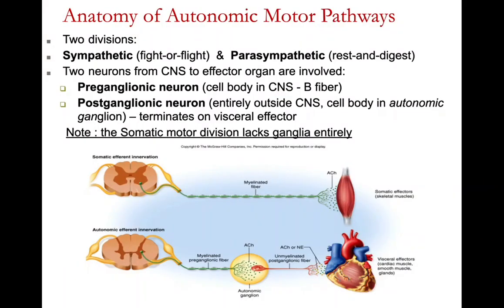There are two divisions: the sympathetic — fight or flight — and the parasympathetic — rest and digest. Two neurons from the CNS to an effector organ are involved. The preganglionic neuron is a B fiber with its cell body in the CNS. The postganglionic neuron is entirely outside the CNS; its cell body is in the autonomic ganglion and it terminates on the visceral effector. The somatic motor division lacks ganglia entirely.